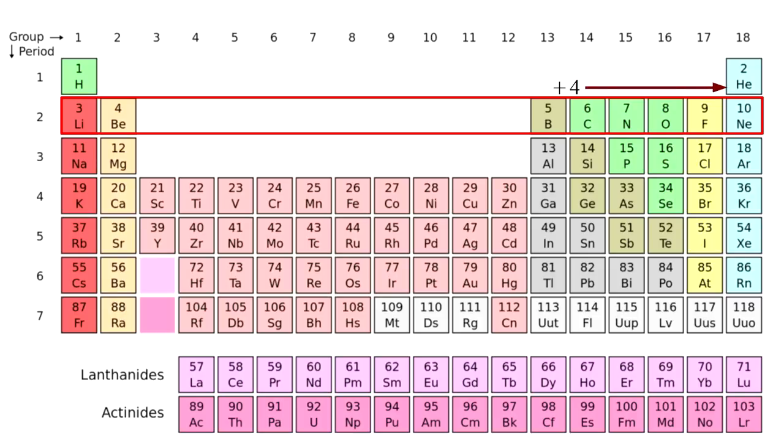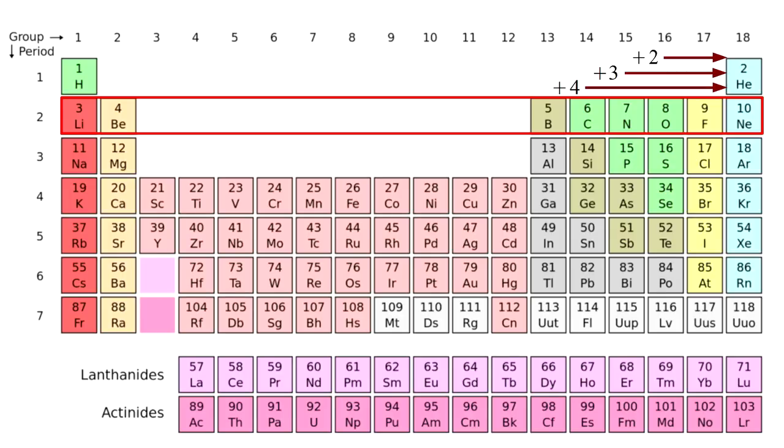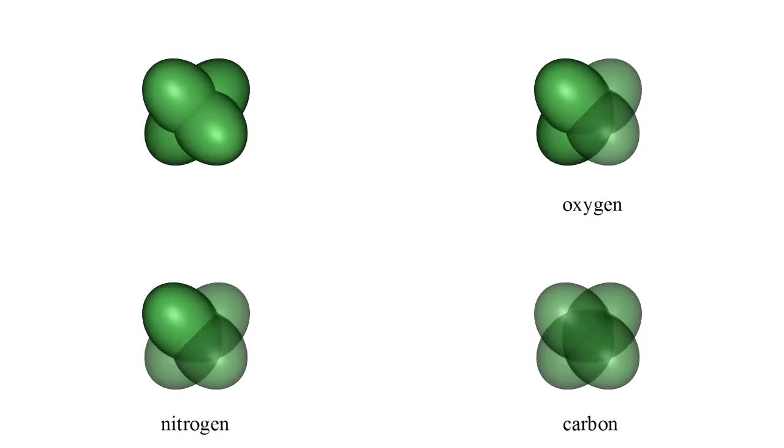Carbon has four electrons fewer, nitrogen three electrons fewer, and oxygen two electrons fewer than the highly stable configuration of neon. Representing two electron orbitals as opaque lobes and one electron orbitals as translucent lobes, we can imagine oxygen, nitrogen, and carbon with the hybrid orbital configurations shown here.